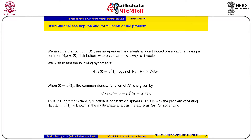Let us recall what we have been doing so far. We have been discussing inference problems about the dispersion matrix of a multivariate normal distribution. In the preceding lecture, we talked about two such hypothesis testing problems and obtained the maximum likelihood estimators of certain relevant parameters. In this lecture, we are going to talk about two such problems.